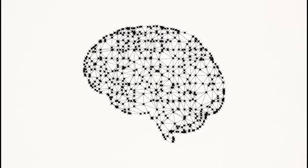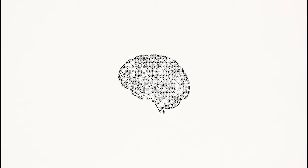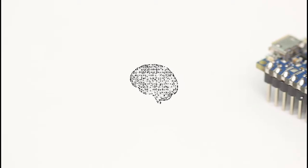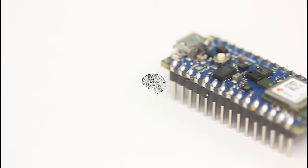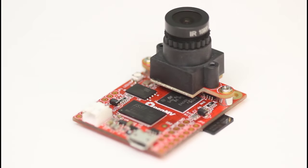Would you like to learn to program devices to identify objects in pictures and videos? As artificial intelligence gets more efficient, we can start to run it on smaller and smaller electronics, which means we can help devices like this see and understand the world around it.